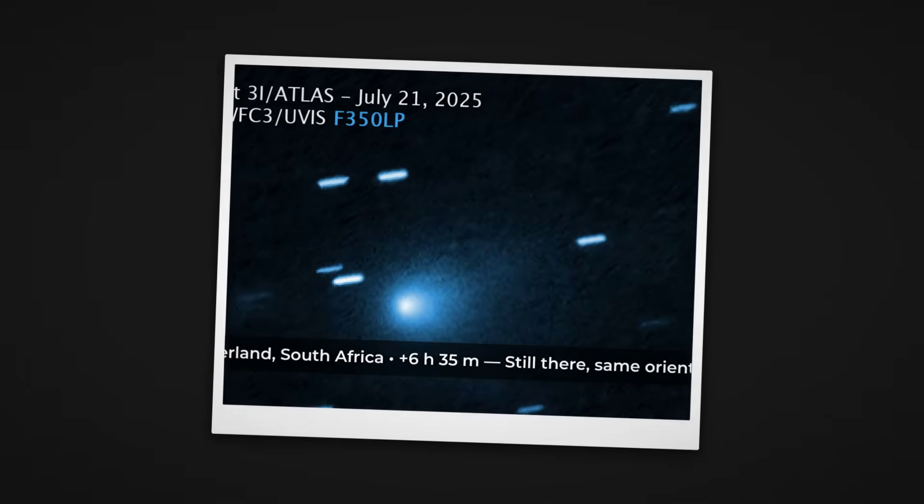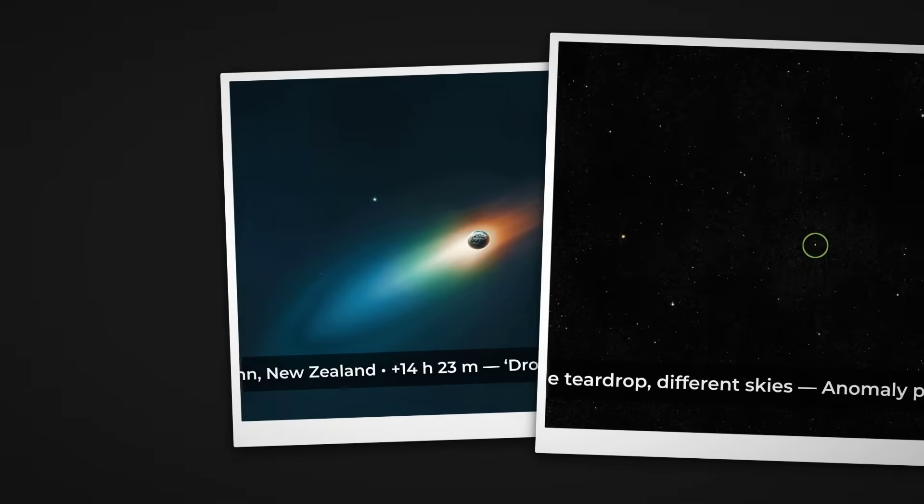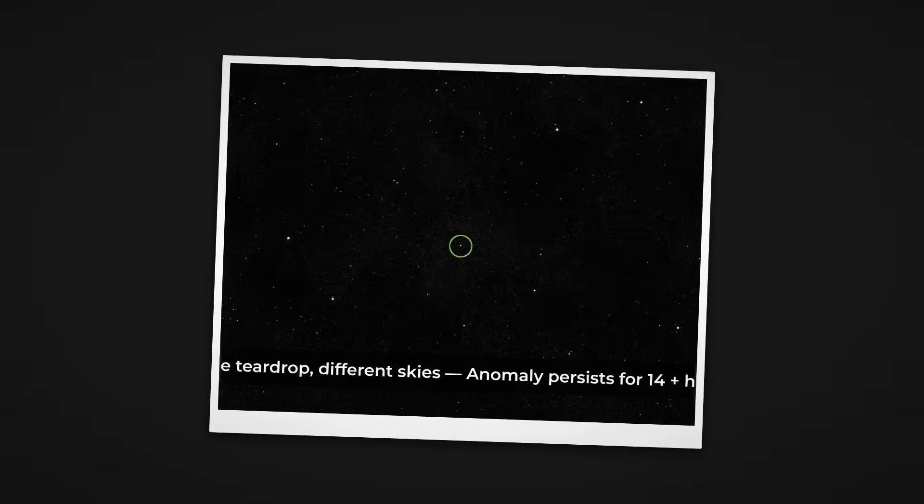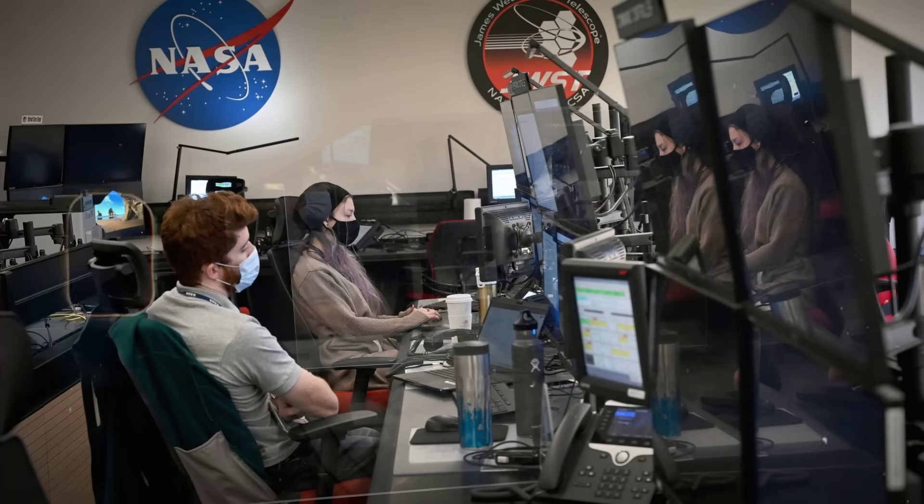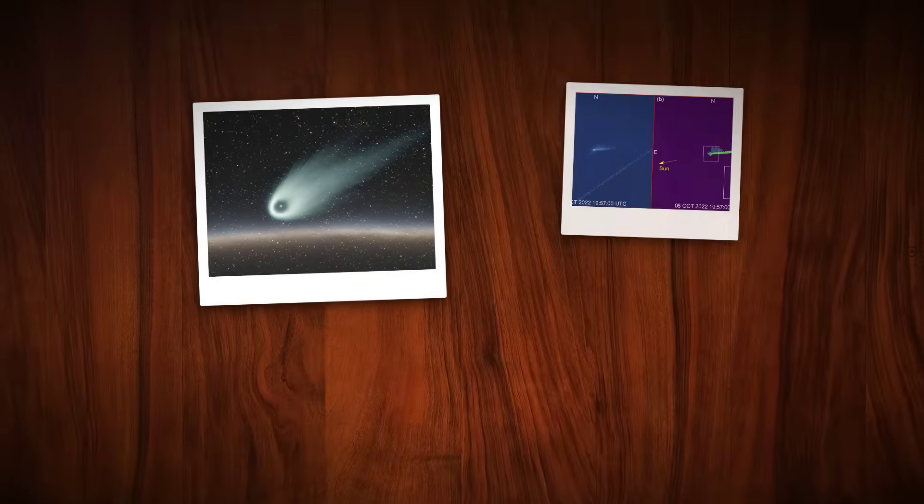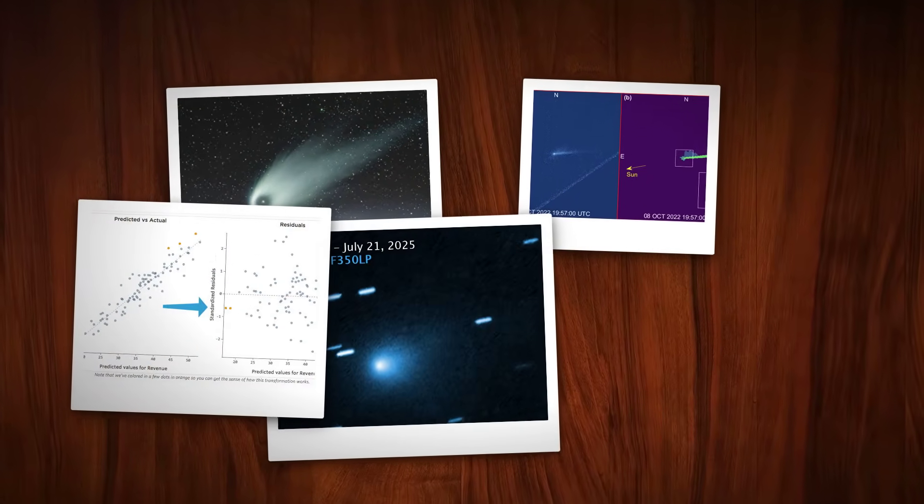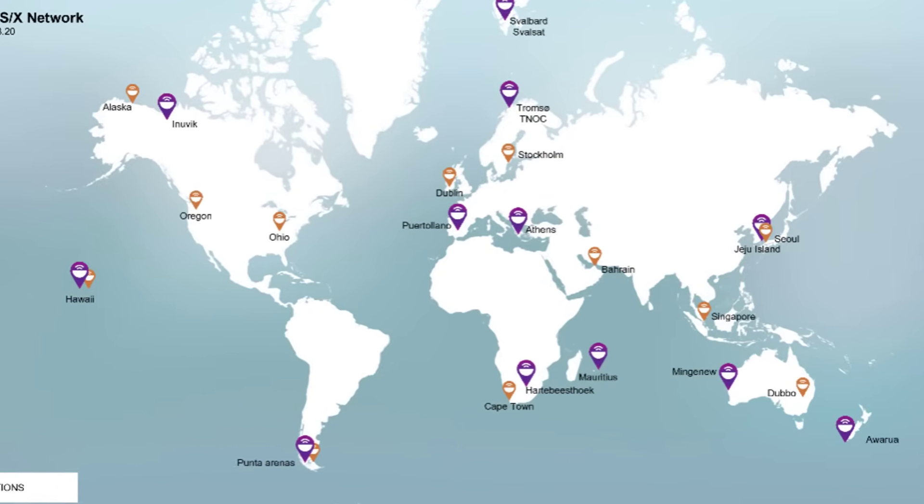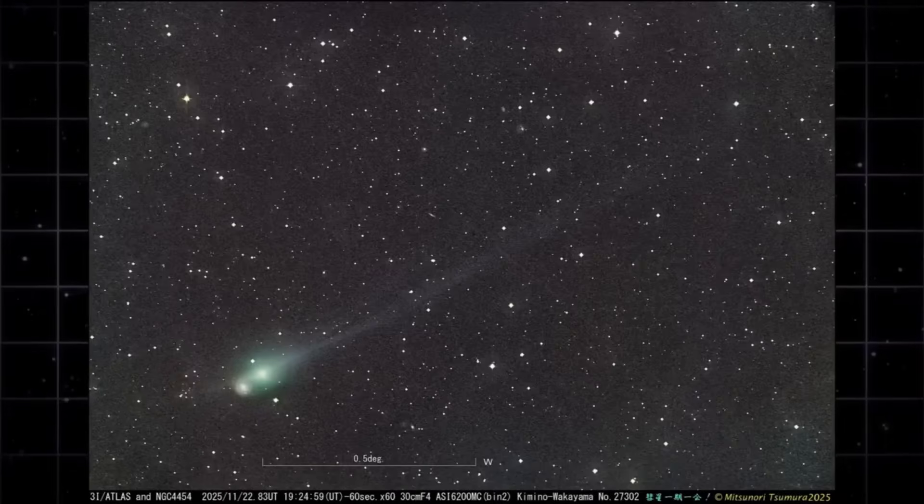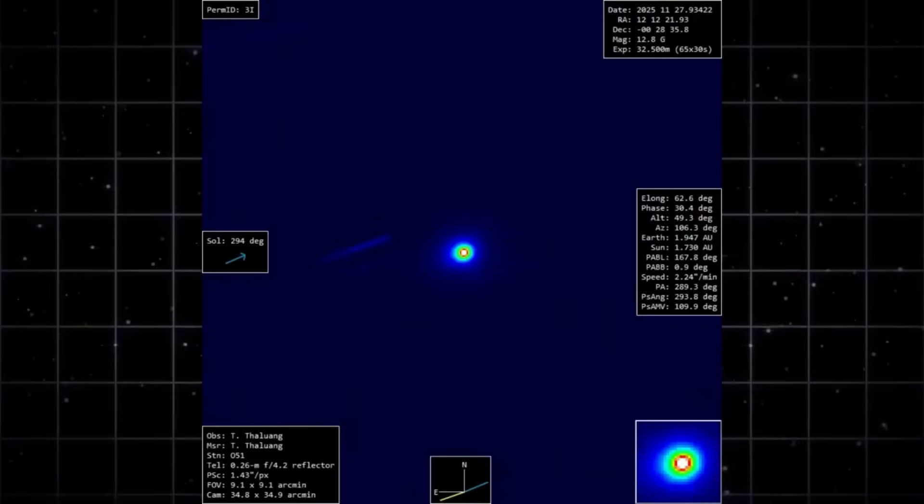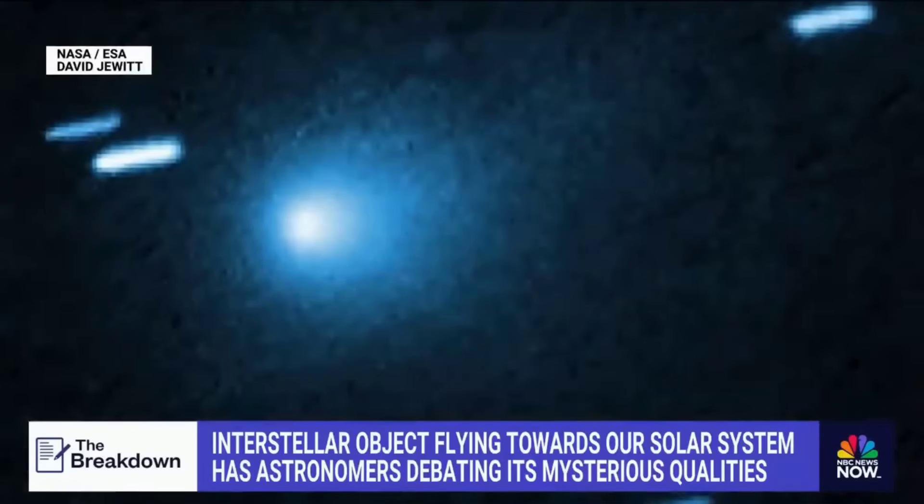Others compare exposures taken hours apart, showing the teardrop feature persists as 3I Atlas drifts across the sky. The growing archive of images invites more questions than answers. Each new observation adds another layer of complexity, hinting at a structure or behavior that standard comet models cannot easily explain. The global, collaborative nature of this monitoring effort ensures that the evidence for the sunward teardrop is not the product of a single instrument or observer. Instead, it becomes a shared puzzle, pressing astronomers to reconsider what a comet, especially one from another star, can look like.